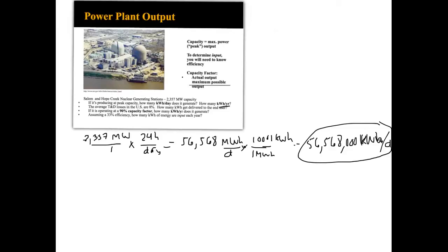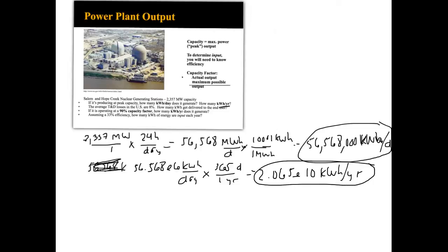If we want to figure out the kilowatt hours in a year, we just need to convert days to years effectively here. So let's convert this to notation of 56.568 times 10 to the 6 kilowatt hours per day. And then we know there are 365 days in one year. So the answer here is 2.065 times 10 to the 10th kilowatt hours per year. And there is at peak capacity our kilowatt hours per year.